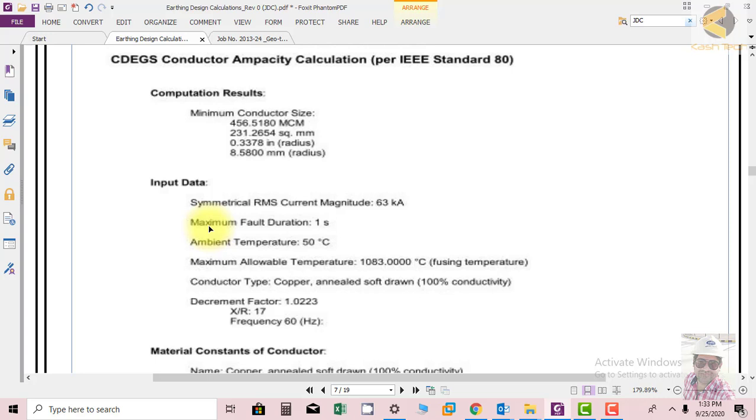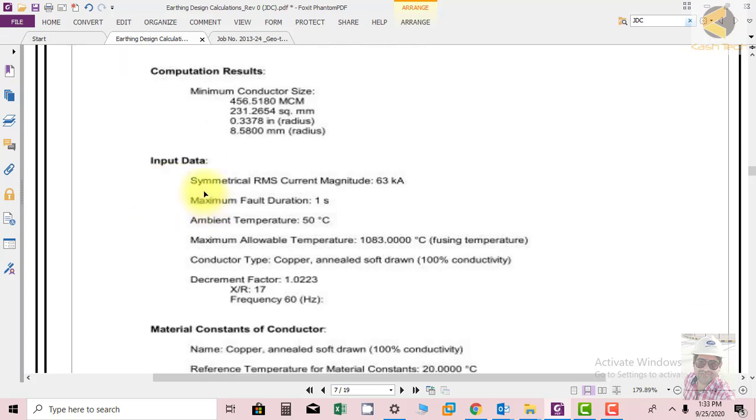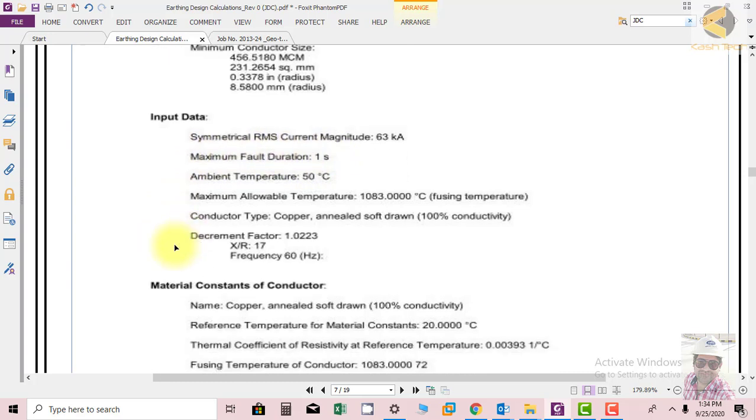In different parameters, sizes are given. Input data: it is showing the input data through the software. Symmetrical RMS current magnitude is 3 kiloamperes. Maximum fault duration is 1 second. This is the maximum fault duration. Actual fault duration by protection should be cleared in 0.5 seconds. With 50-100% margin we are using 1 second fault duration. Ambient temperature 50 degree centigrade.